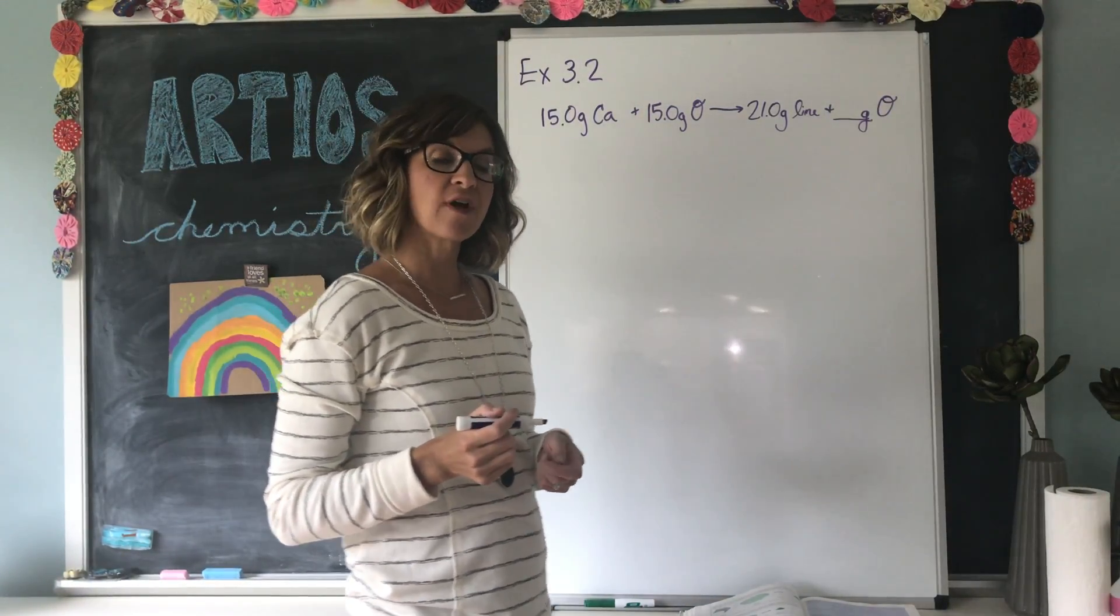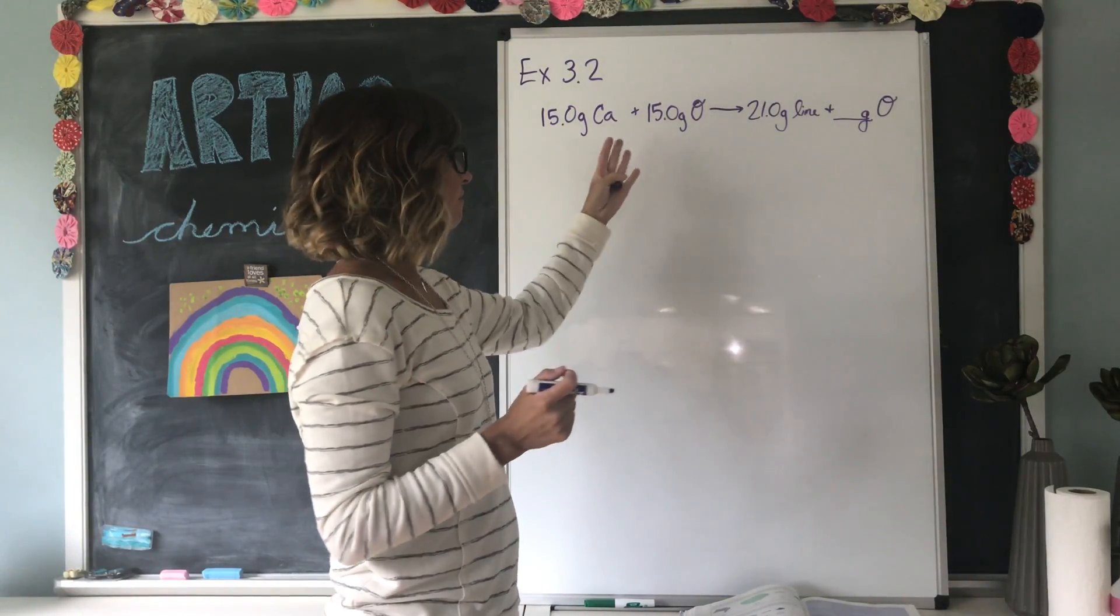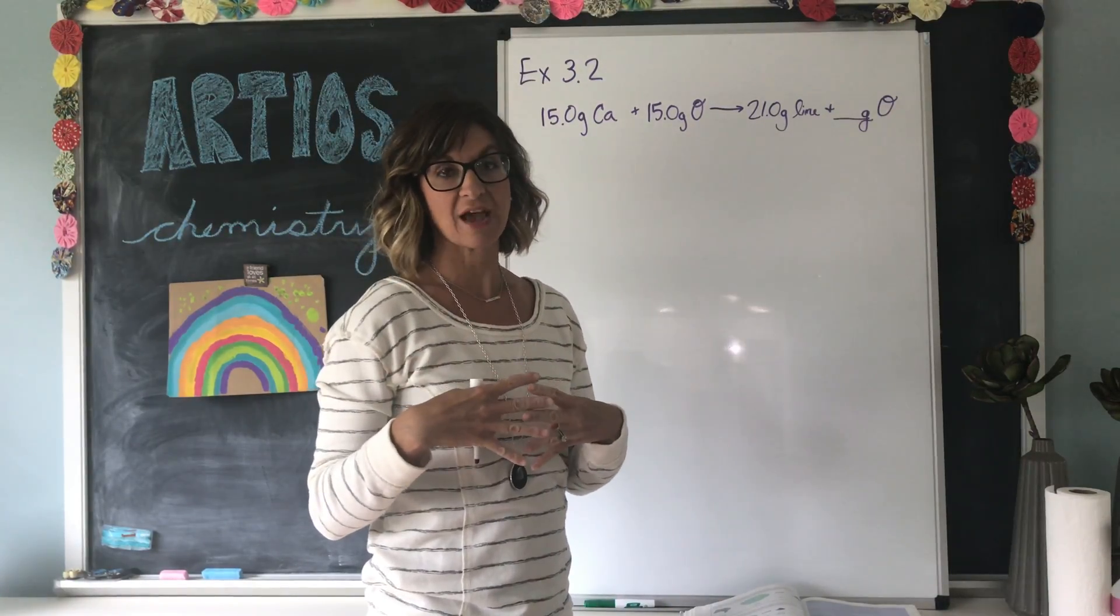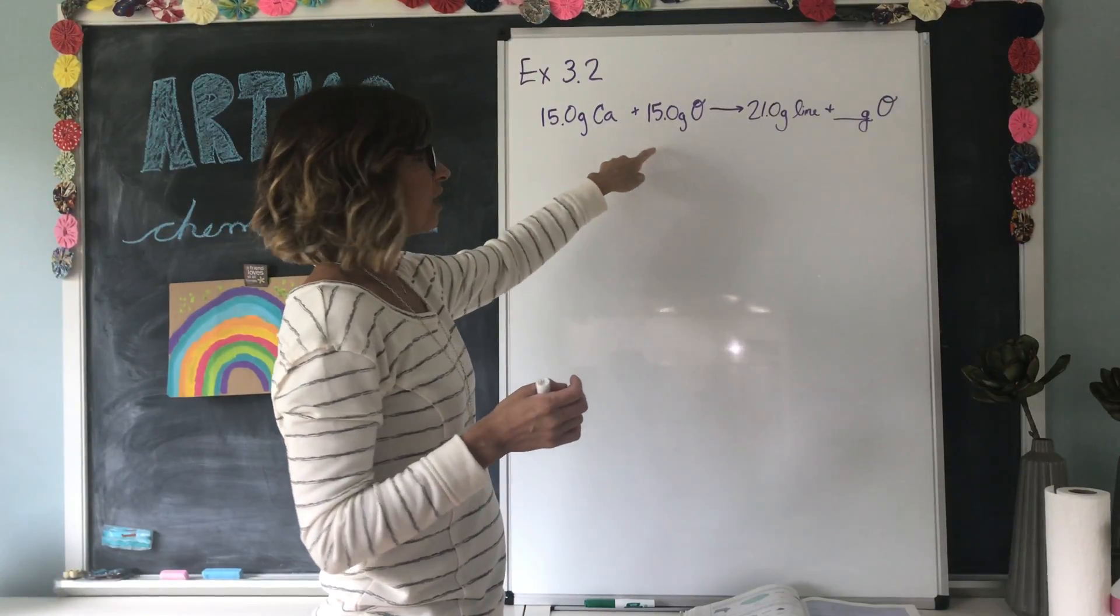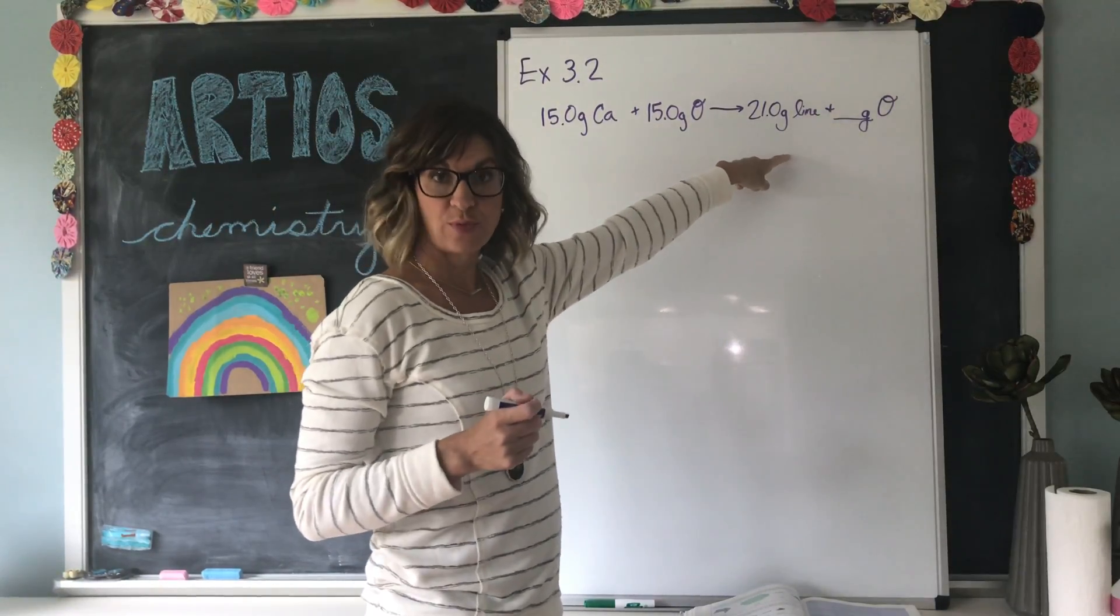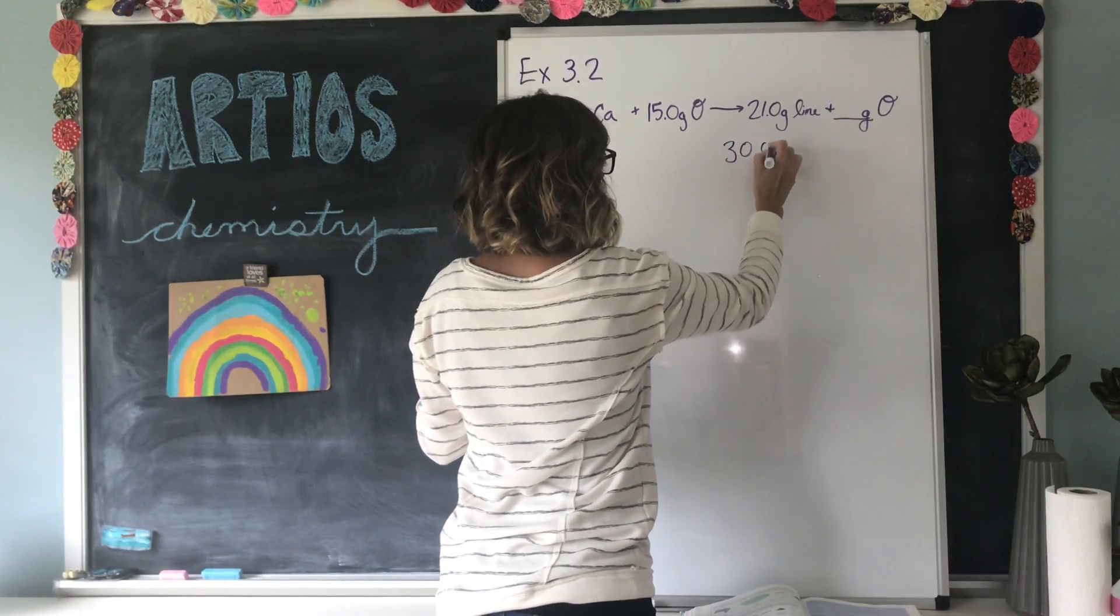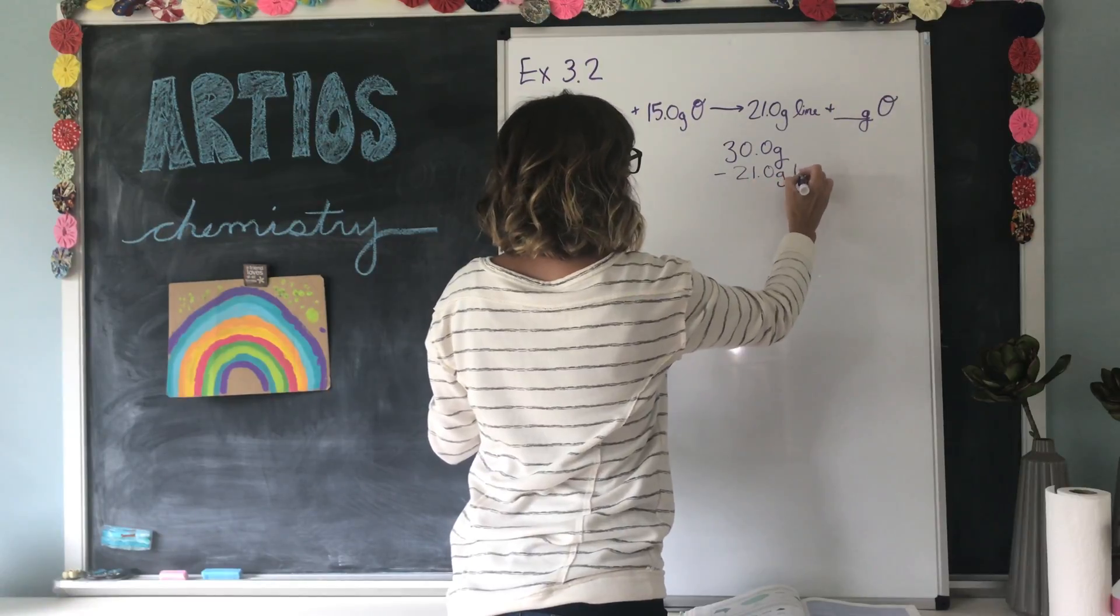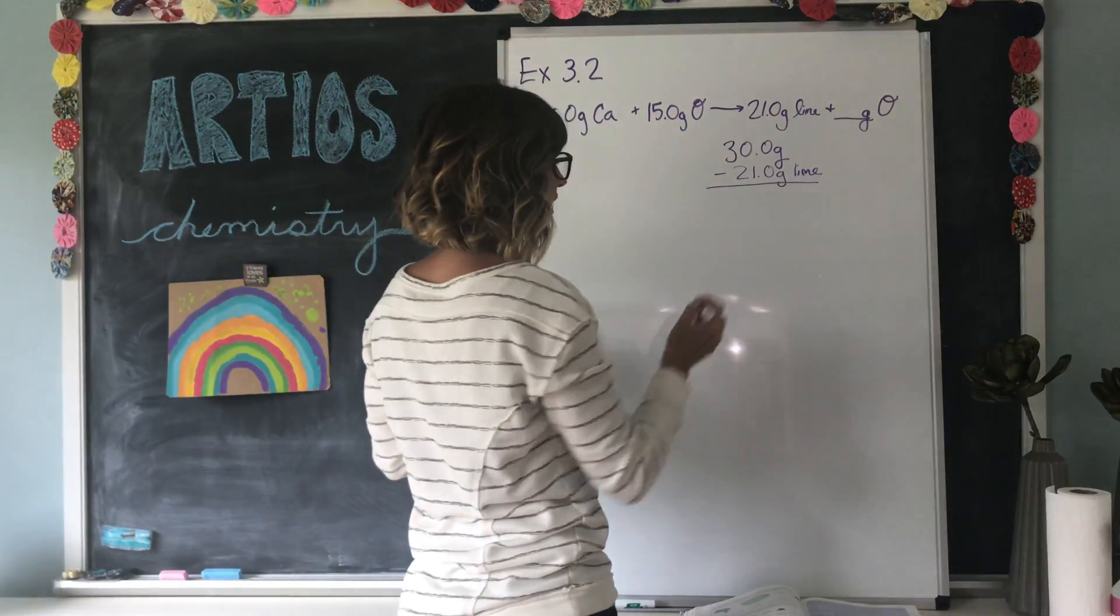Well, if you remember from the law of conservation of matter, the mass before the reaction and after the reaction has to be equal. We cannot create or destroy matter. So if it equals 30 grams over here, we must end up with 30 grams over here. 30.0 grams minus the 21.0 grams that we know is lime is going to tell us how much leftover oxygen we have.